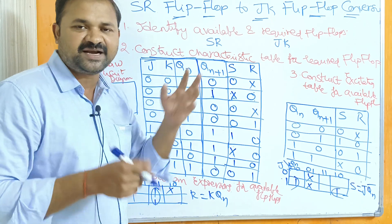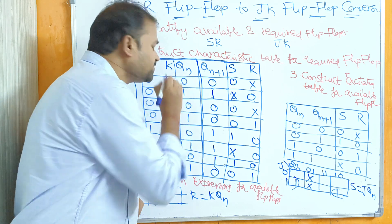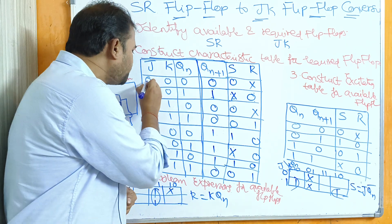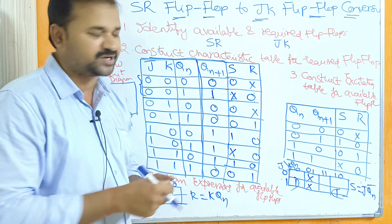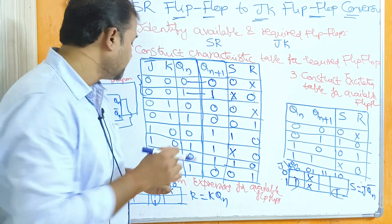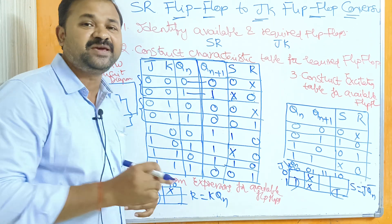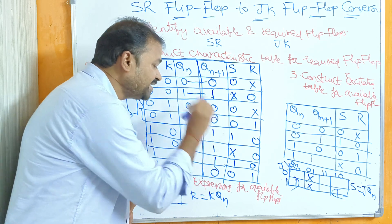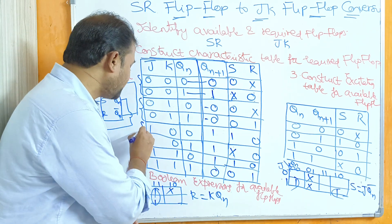The eight combinations go from zero (000) to seven (111). For the first two combinations, when inputs J and K are both zero, there is no change in the current state — the next state output is the same as the current state. Zero remains zero and one remains one. When inputs are J=0, K=1, irrespective of the current state, the output is zero, because K=1 means reset, so the output resets to zero.